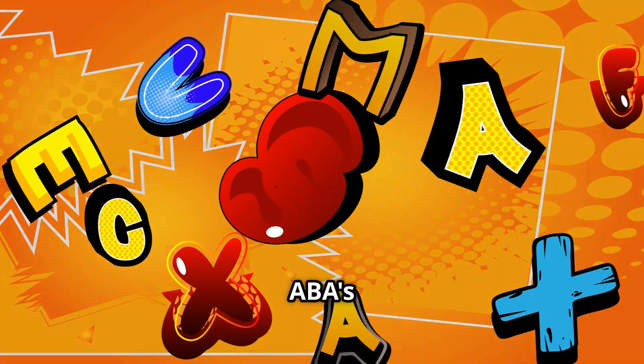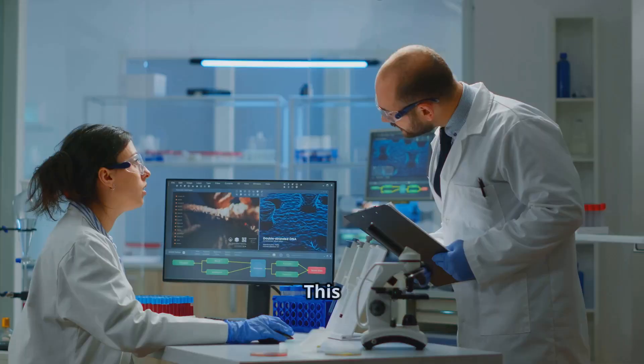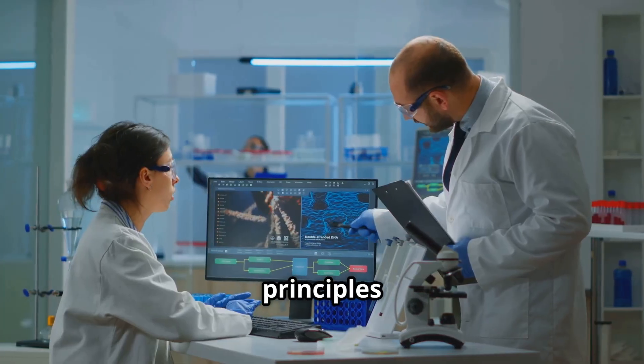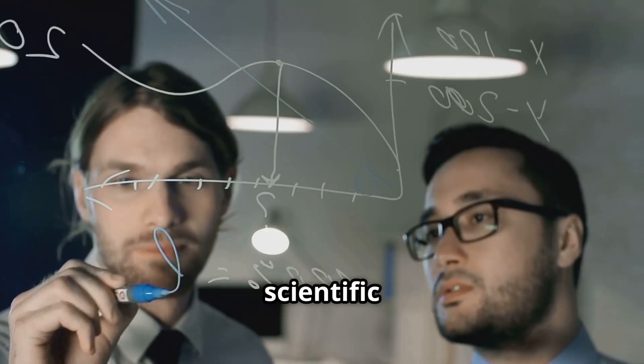Let's keep exploring ABA's super dimensions. Number five is conceptually systematic. This means all methods and procedures in ABA are based on fundamental principles of behavior science. Everything connects back to well-established scientific principles.